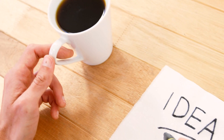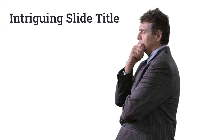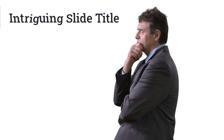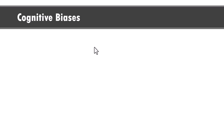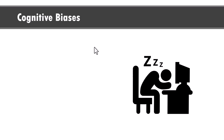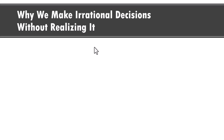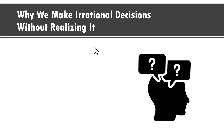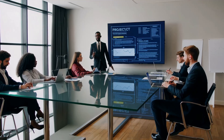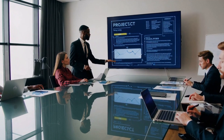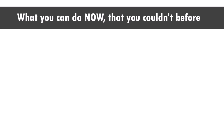Let us explore the last idea to refine our slide titles: using slide titles to build intrigue in the audience's minds. For a psychology lecture, instead of using a slide title like 'cognitive biases,' which doesn't trigger any curiosity, you can write 'why we make irrational decisions without realizing it.' People want to know the answer, so they stay with you. Similarly for a software update presentation, instead of 'new features,' you can write 'what you can do now that you couldn't do before.' Can you see the difference?